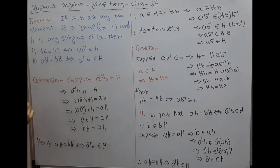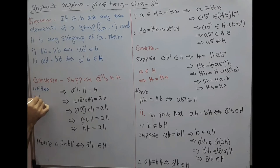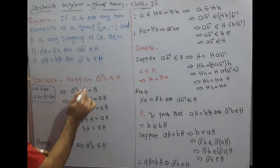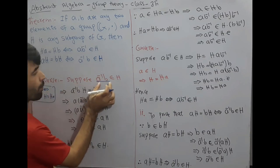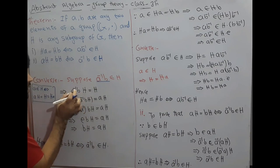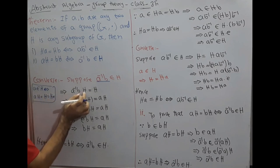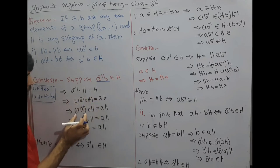From the theorem proved in the last lecture: if A belongs to H, then aH = H = Ha. Using that result here, instead of A we have a⁻¹·b belongs to H. Therefore a⁻¹·b·H = H.